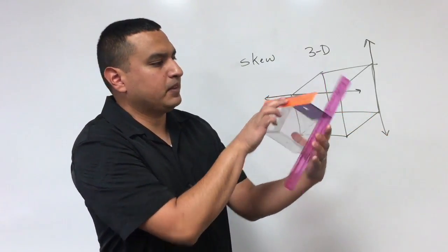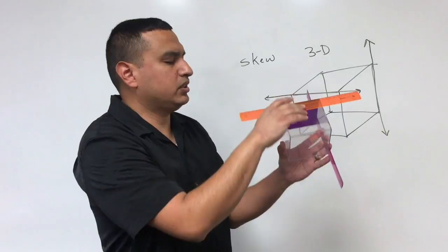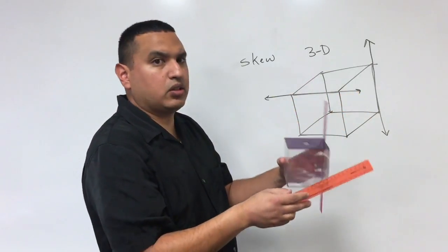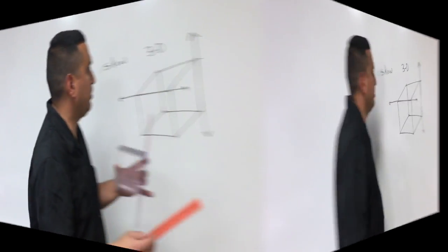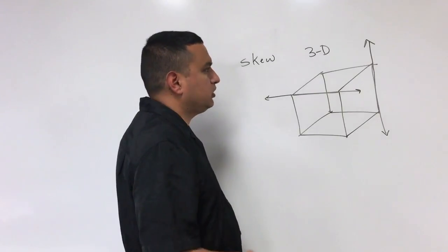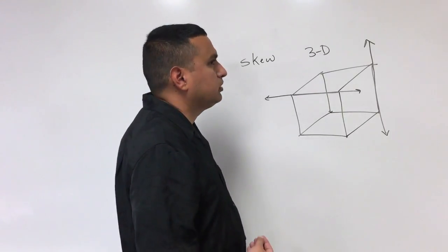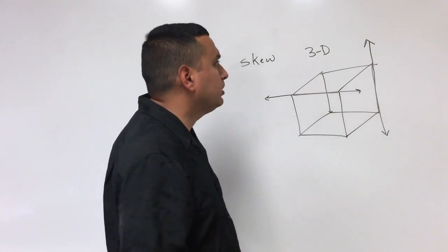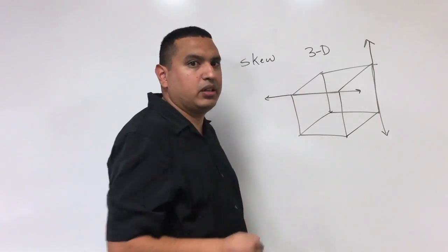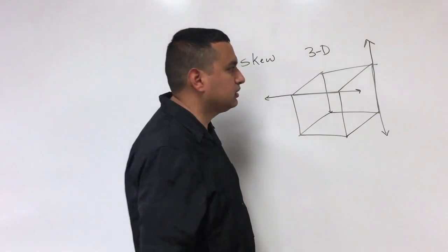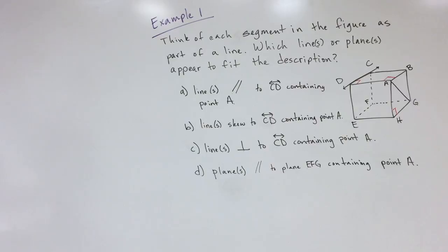If I turn it, I can rotate in any direction and those two lines are on two separate planes. Skew lines means they do not intersect and they're not parallel. Remember, they're 3D and must be on two separate planes.